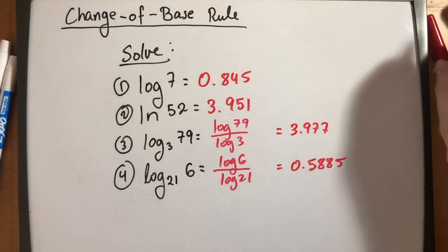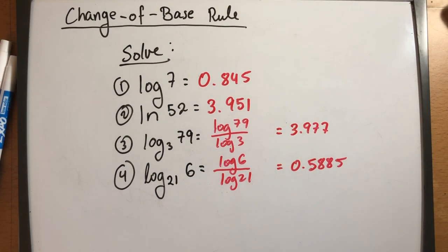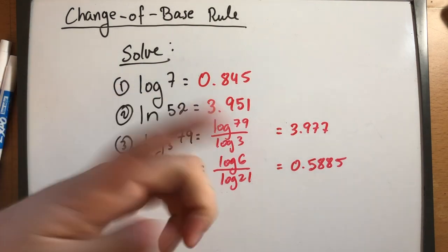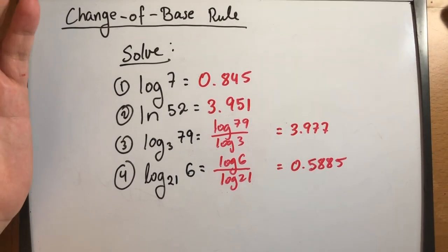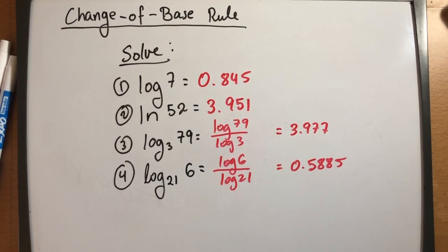And there you have it. Here are the final answers. For the last two, I converted them to the common log. But if you chose to do the natural log instead, you would have set it up the same way. But with ln instead of log, you would have ended up with the same exact answers as well. So hope this video helped, and I'll see you in the next one.